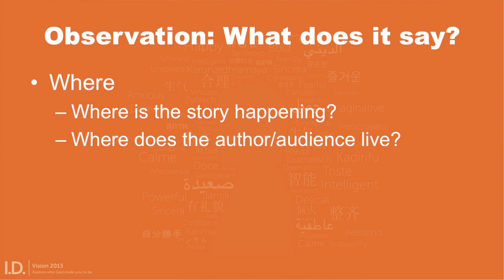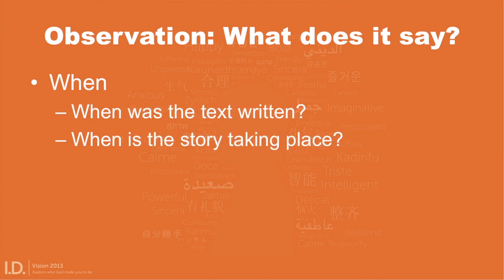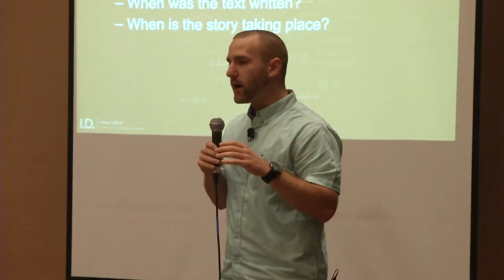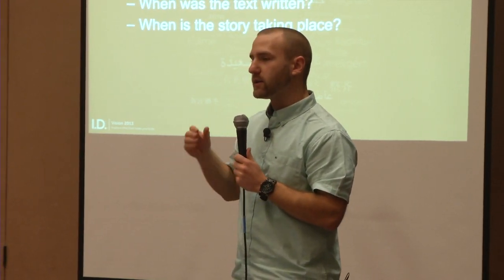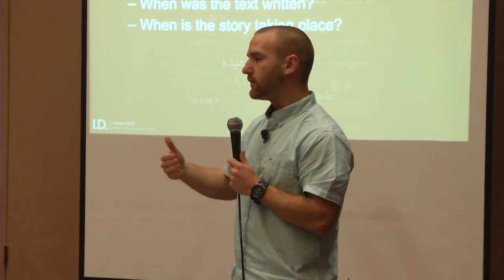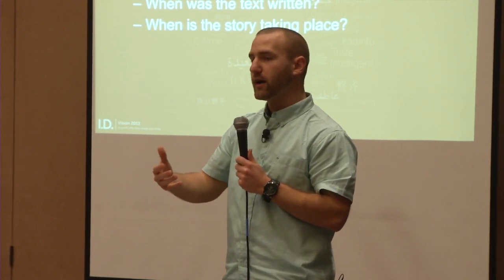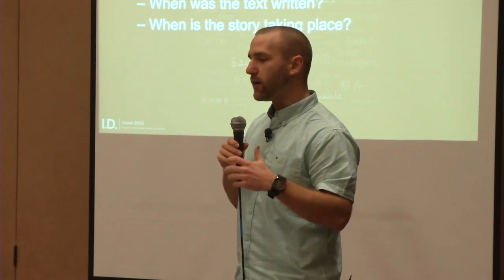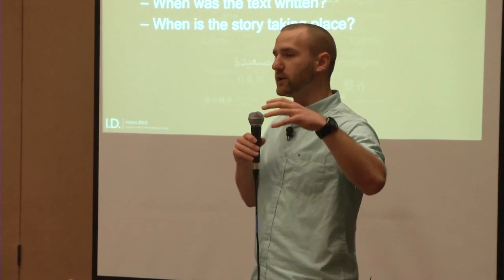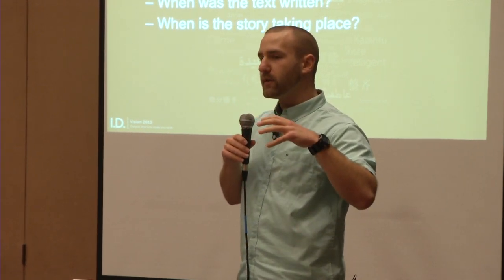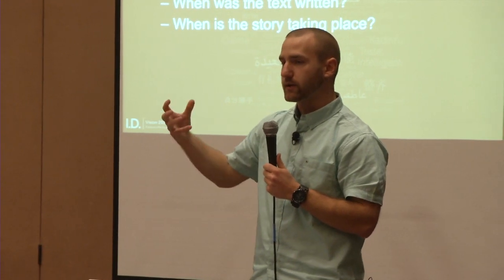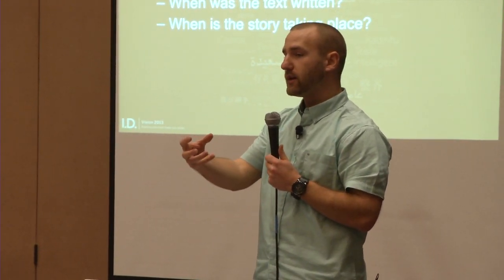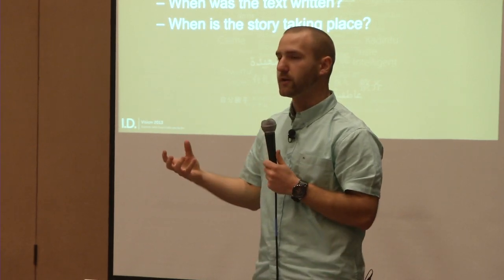You're also looking at where — where's the story happening, what's the scene, where does the author and audience live. And when — when was the text written, when is the story taking place. One of the reasons it's good to hang out on observation is that it's really easy to come in with our own assumptions about what we think the text says and let that dictate what we get out of it. The more time we spend on observation and simply observing what's on the surface, the more God is able to help us see something we wouldn't have expected. The more time we spend on observation, the more fruitful our interpretation and application is going to be.